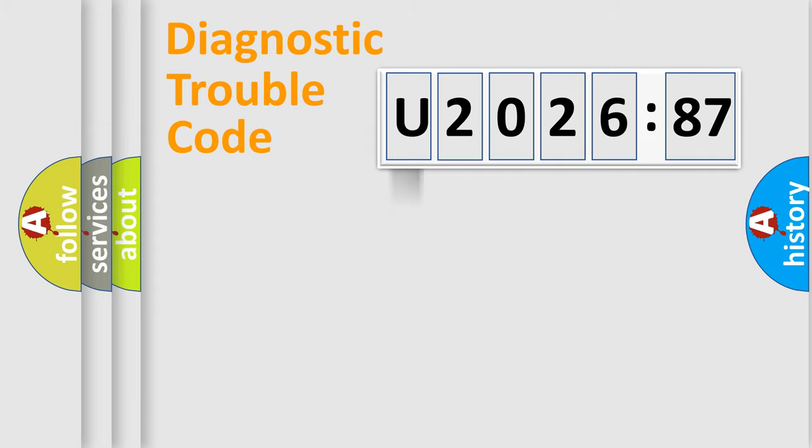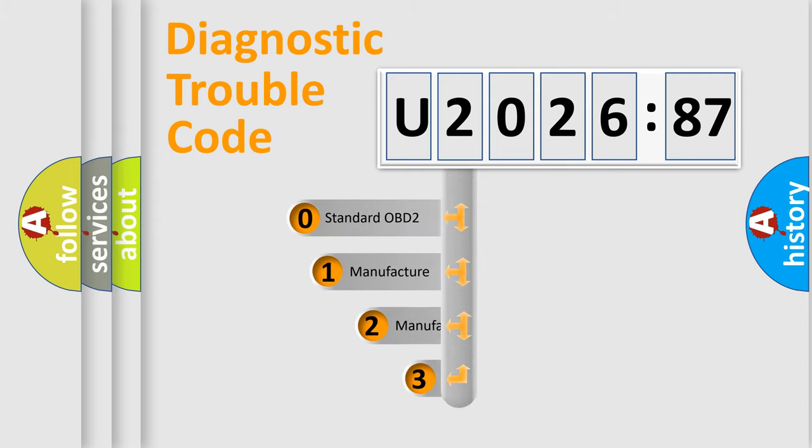Powertrain, Body, Chassis, Network. This distribution is defined in the first character code.